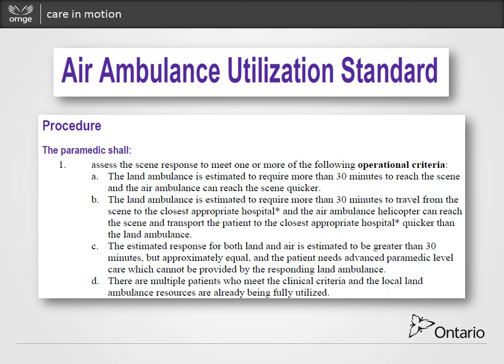The third criterion is that the estimated response for both land and air is greater than 30 minutes and approximately equal, but the patient needs an advanced level of care during transport not available in the land service. Finally, the fourth is multiple patients, mass casualty, or local land resources being outstripped by the level of calls in that region. Really, the air ambulance is not a treatment itself — it's speed. The clinical conditions where speed to the most appropriate hospital is of value are sick patients with long transport times or long EMS response times.